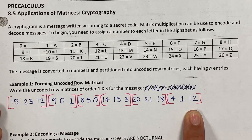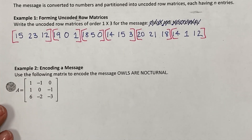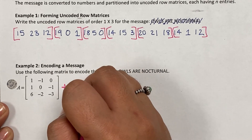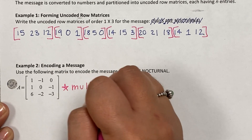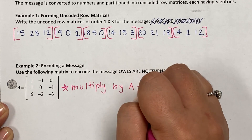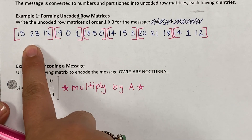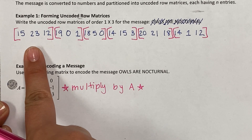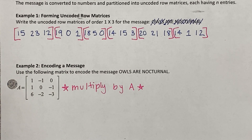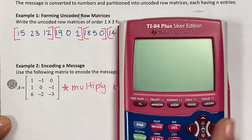The second example is to actually encode the message. Any time you are encoding, you are going to multiply by matrix A. I'm going to take all of the matrices from example 1 and multiply each by matrix A. In the calculator you can do it a couple of different ways.